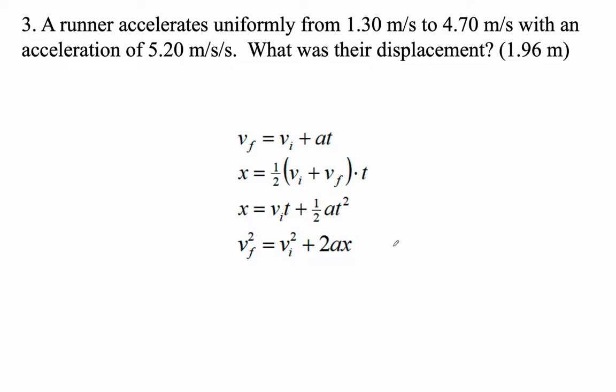A runner accelerates uniformly, as they always do, right? From 1.3 meters per second to 4.7 meters per second. So I think this is our initial velocity, this is our final velocity, this is our acceleration. What was our displacement?